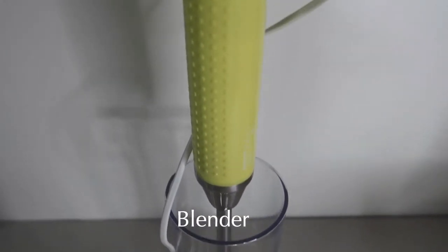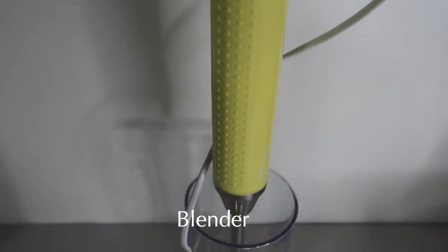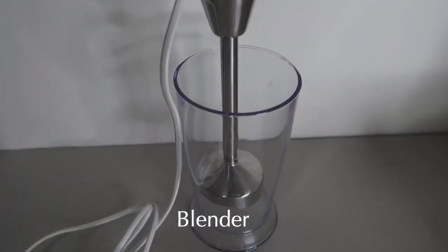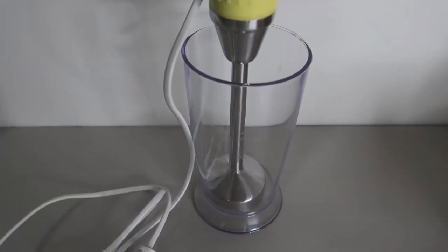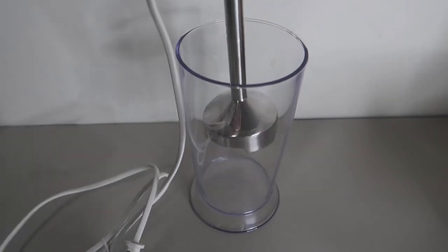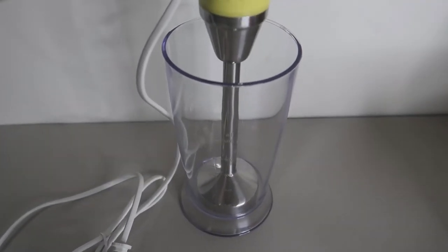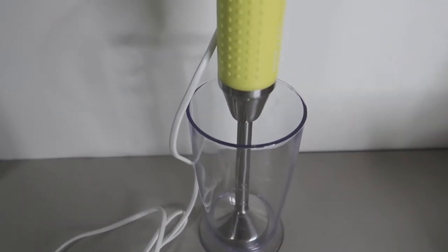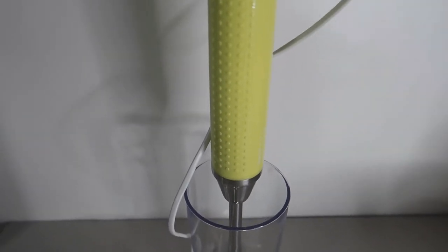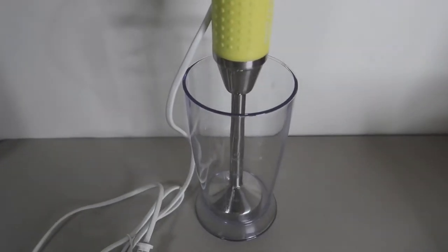Next on my list is this hand blender which I use every time na magpupuree ako ng food ni baby. Although right now, bihira ko siyang gamitin dahil mas preferred kong magbigay ng mash food sa aking baby. Pero kung gusto ninyo magpuree, isa ito sa mga magagandang device to use.